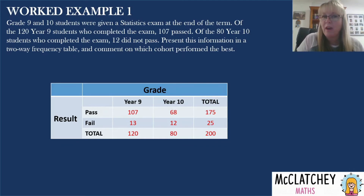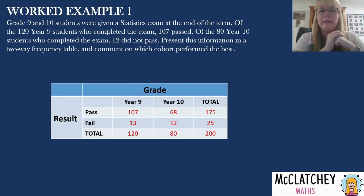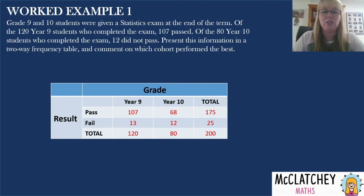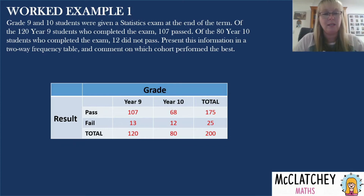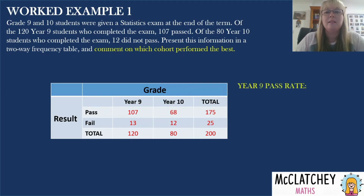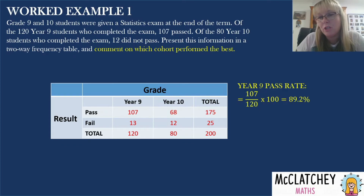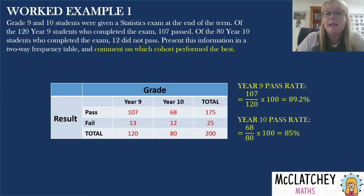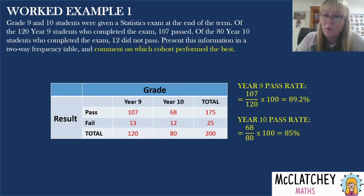Now we need to work out which cohort performed the best. We've got two cohorts of completely different sizes — 120 and 80 — so the best way to compare is with percentages. I'm going to work out what percentage of Year 9s passed and what percentage of Year 10s passed, then compare the pass rates. Year 9: 107 out of 120 multiplied by 100 gives 89%. Year 10: 85% of those students passed. So the pass rate in Year 9 was better, and therefore Year 9 was the cohort that performed the best.